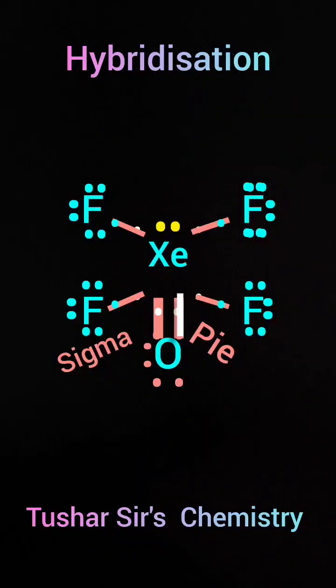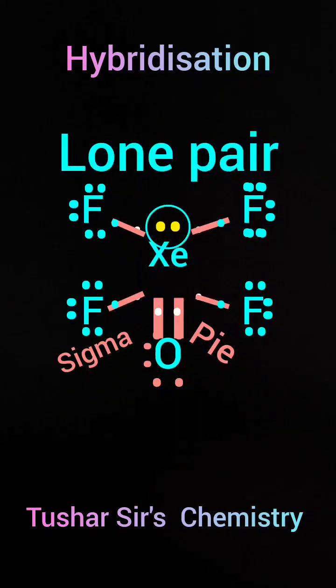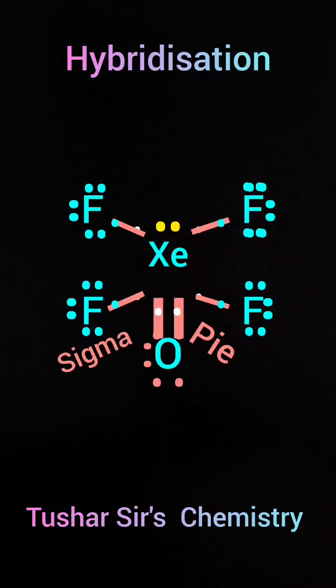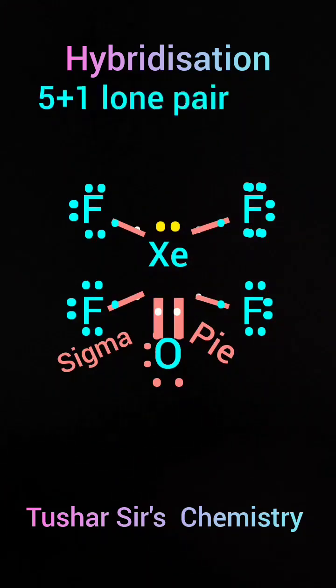Pi bond is not included in hybridization. And another one remained as lone pair. So number of sigma bonds is equal to five. Pi bond is not included in the trick. Number of lone pairs is equal to one.